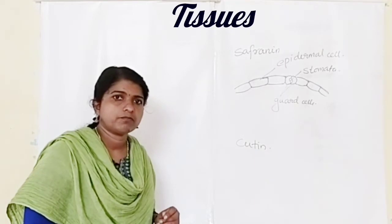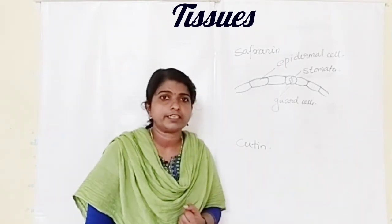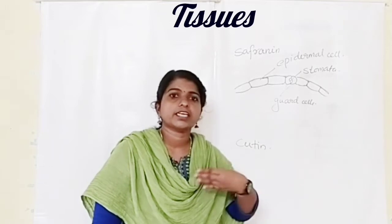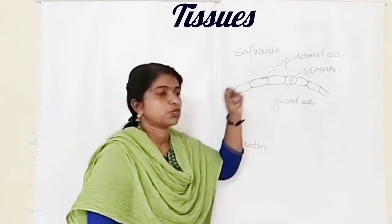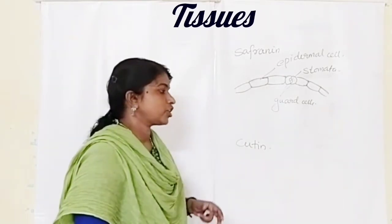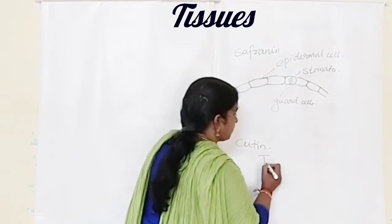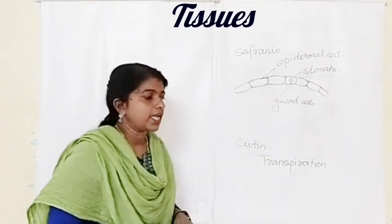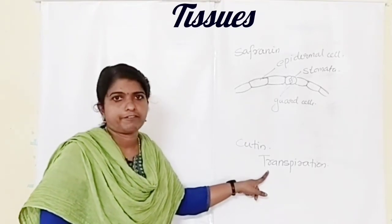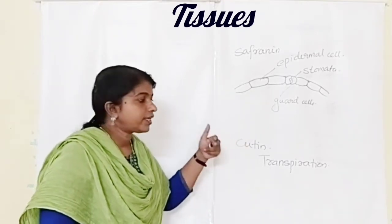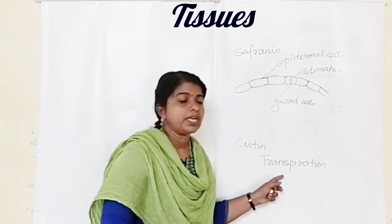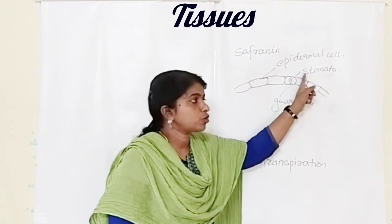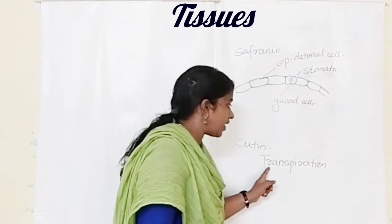Why are these stomata present on the leaf? What are the functions of stomata? Stomata help in the exchange of gases — oxygen and carbon dioxide. That exchange is regulated by stomata. The second function is transpiration. Stomata also help in transpiration, which is the loss of water in the form of water vapor from the plant. So stomata help in the exchange of gases as well as in transpiration.